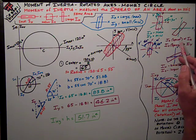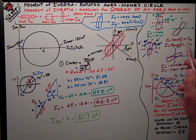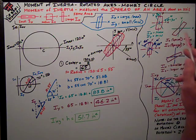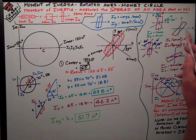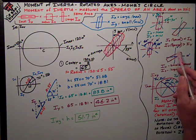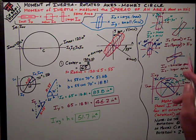So iu, it's measure of its spread, is less than ix in this case, and iv, the spread about the v-axis, is greater than it was about the y-axis.